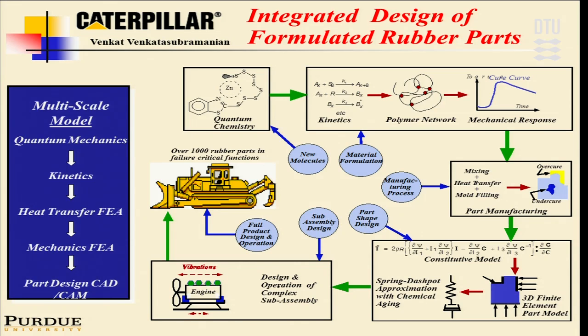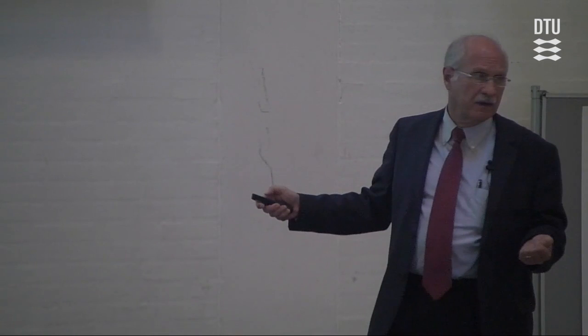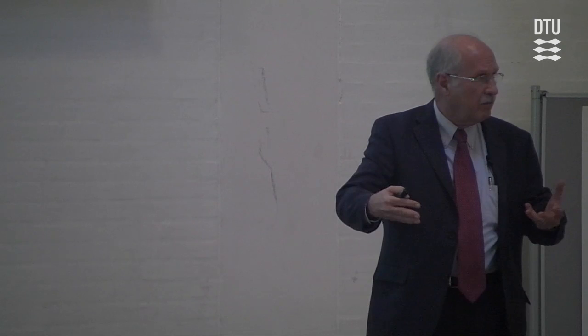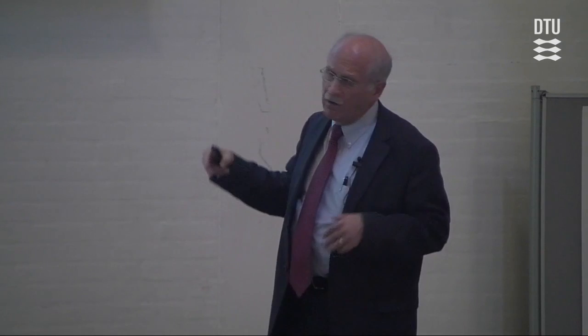Another example is multi-scale design and analysis — work by Venkat when he was at Purdue. The idea is an integrated design environment for formulated rubber plants, a project for Caterpillar. You go all the way from quantum mechanics to predict reaction kinetics, then to heat transfer analysis using finite element analysis, looking at constitutive models for mechanics, and finally the design of the part. This integrates a whole set of different levels, accomplished with tools developed in process systems engineering.